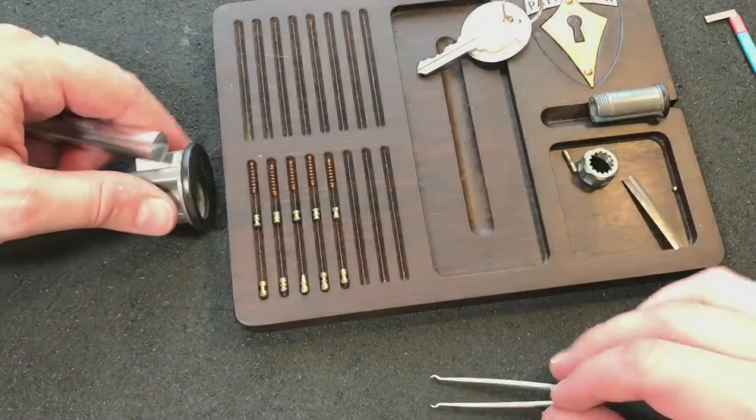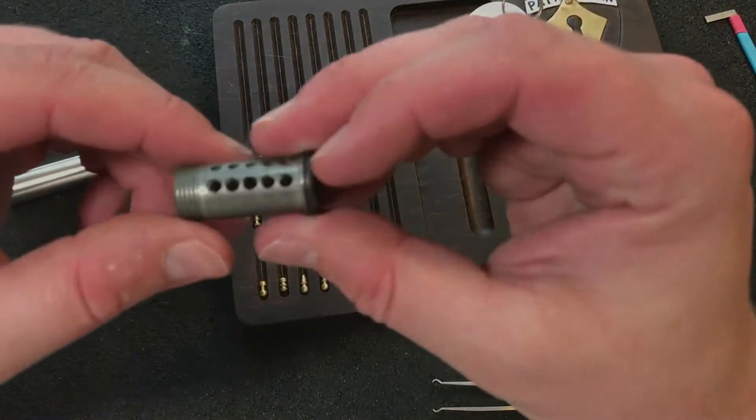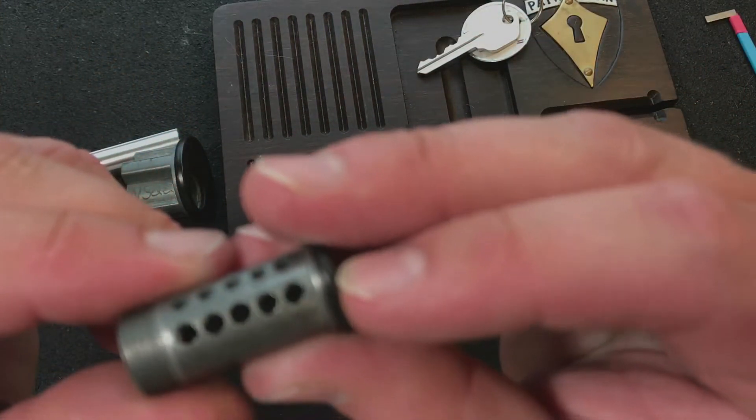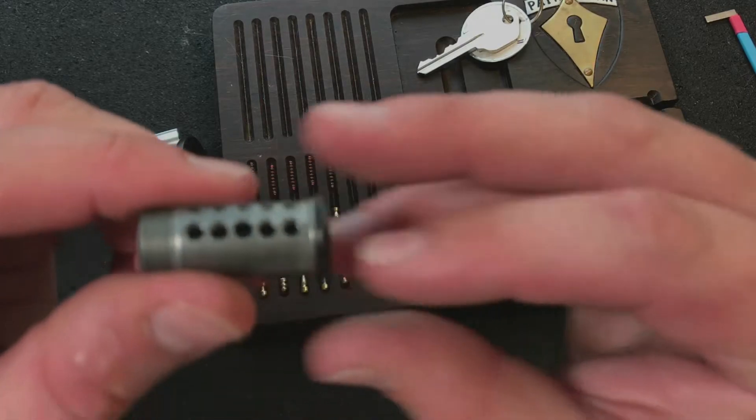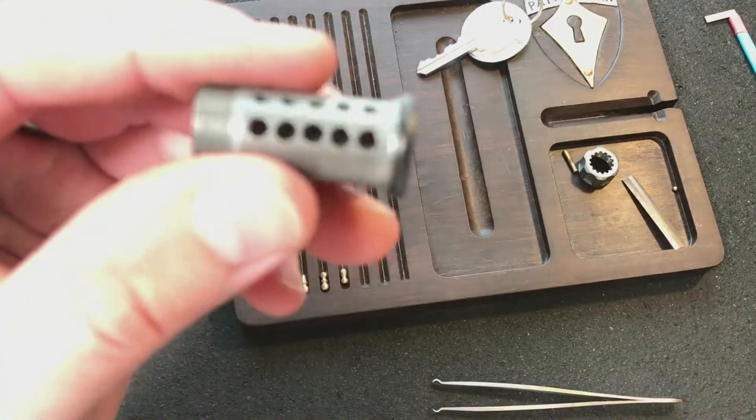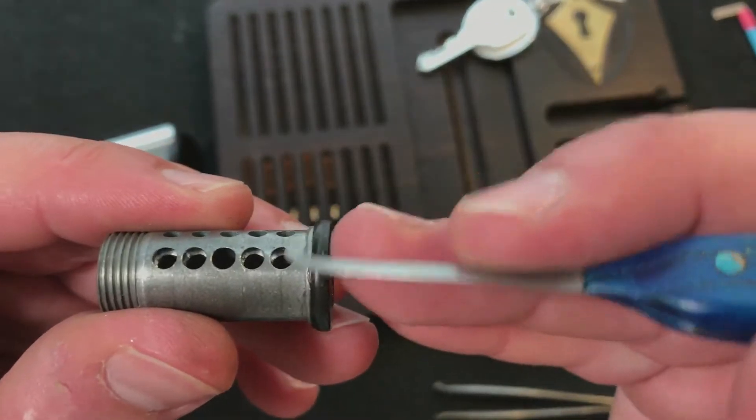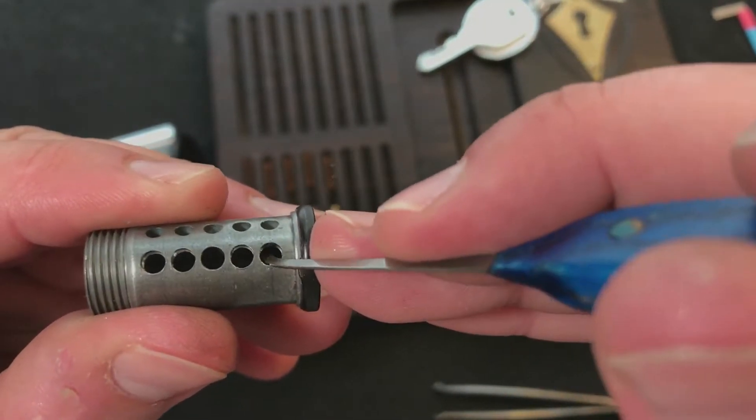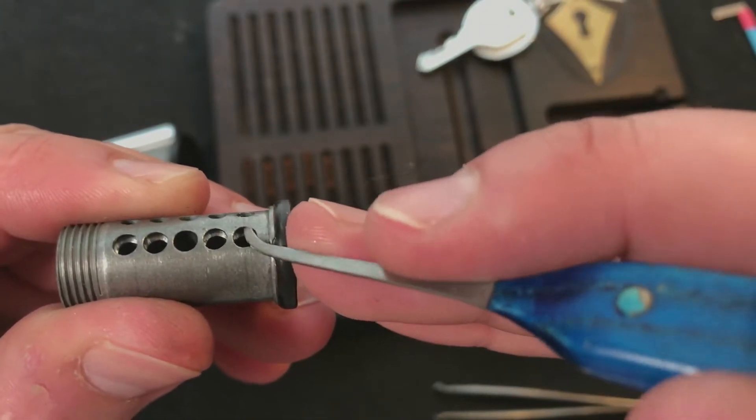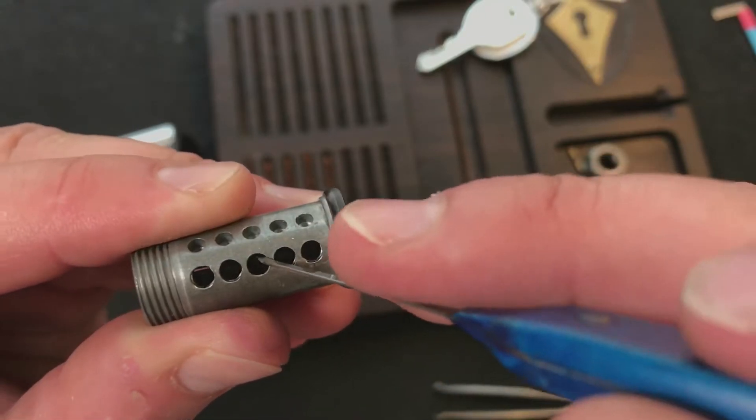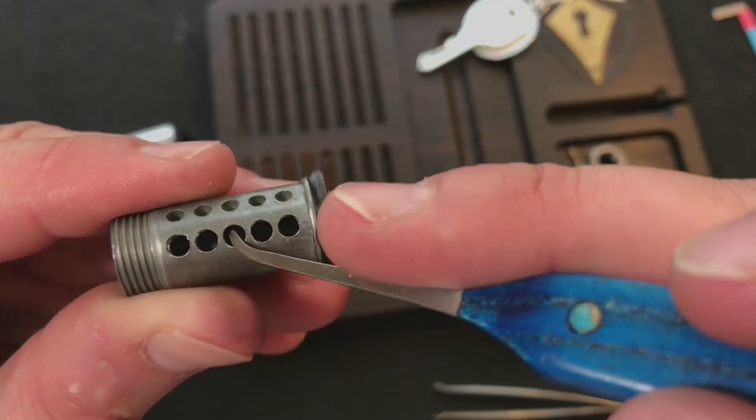Okay, so let's have a close-up look at the core. I think I see some counter milling on chambers one. Yeah, that's some counter milling on one, two, four, and five. Nothing on the third chamber.